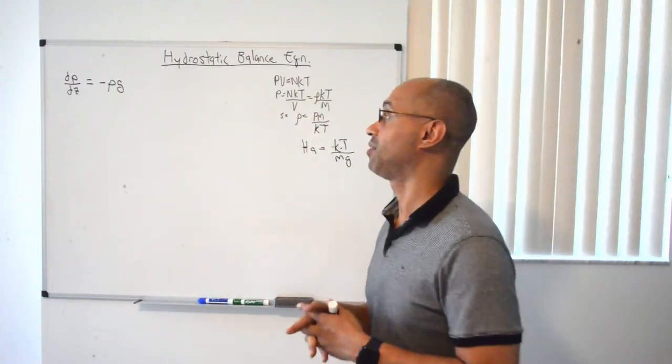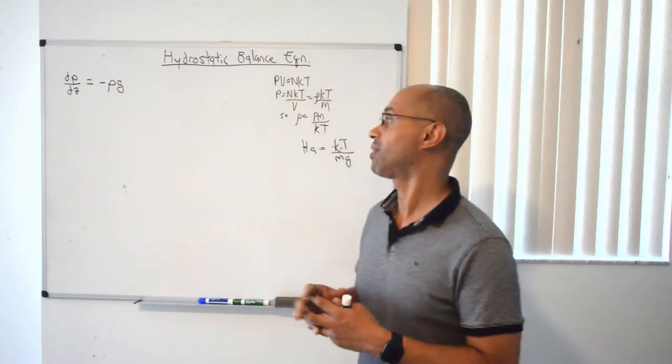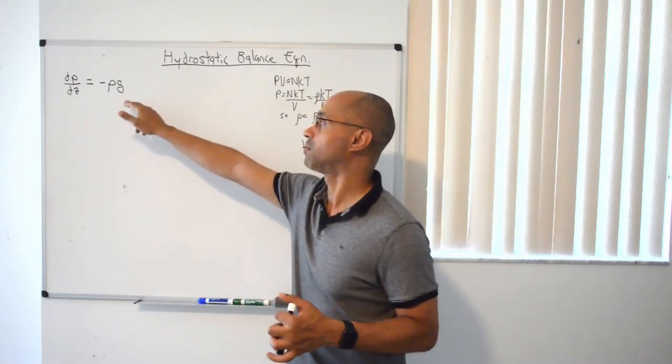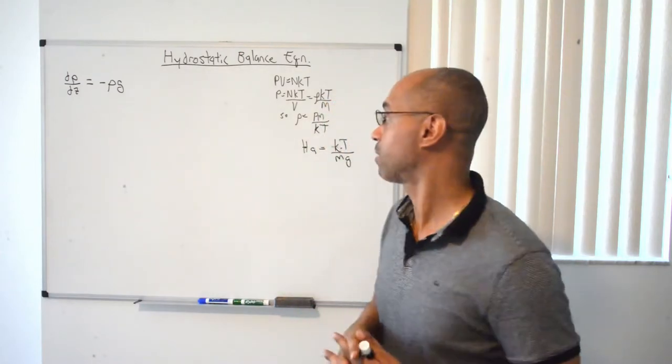Hello everyone. So, as you know from the Andrews textbook, we've come to this equation here, dp over dz equals negative ρg. This is an equation of hydrostatic balance.